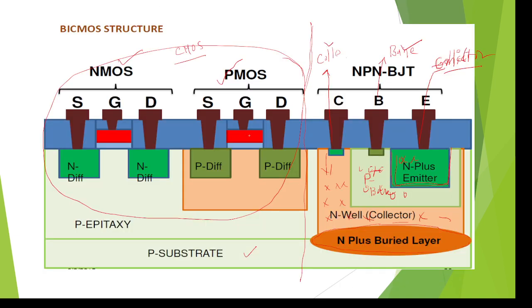To summarize: on the left side, CMOS fabrication process steps design the NMOS and PMOS transistors. On the right side, the bipolar transistor is fabricated by first forming the N+ buried layer, then diffusing electrons to form the N-well collector, then diffusing holes into the N-well to form the P+ base, and finally diffusing electrons into the P+ base region to form the emitter. This way, both CMOS and bipolar technology transistors are designed on the same substrate. Thank you for watching — please subscribe.